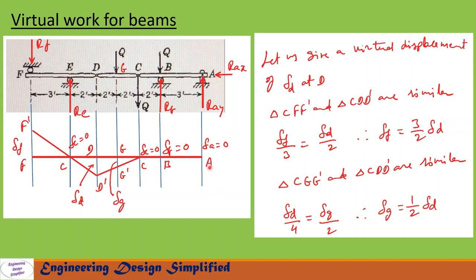The beam will assume the position A, B, C, G prime, D prime, C, and F. Here we have two similar triangles: C, F, F prime and C, D, D prime. The distances given are 3 feet and 2 feet. From these two similar triangles we can write delta F / 3 = delta D / 2, so delta F = (3/2) delta D. Another set of similar triangles is C, G, G prime and C, D, D prime. The distance from C to D is 4 feet and from C to G is 2 feet, giving delta G = (1/2) delta D.